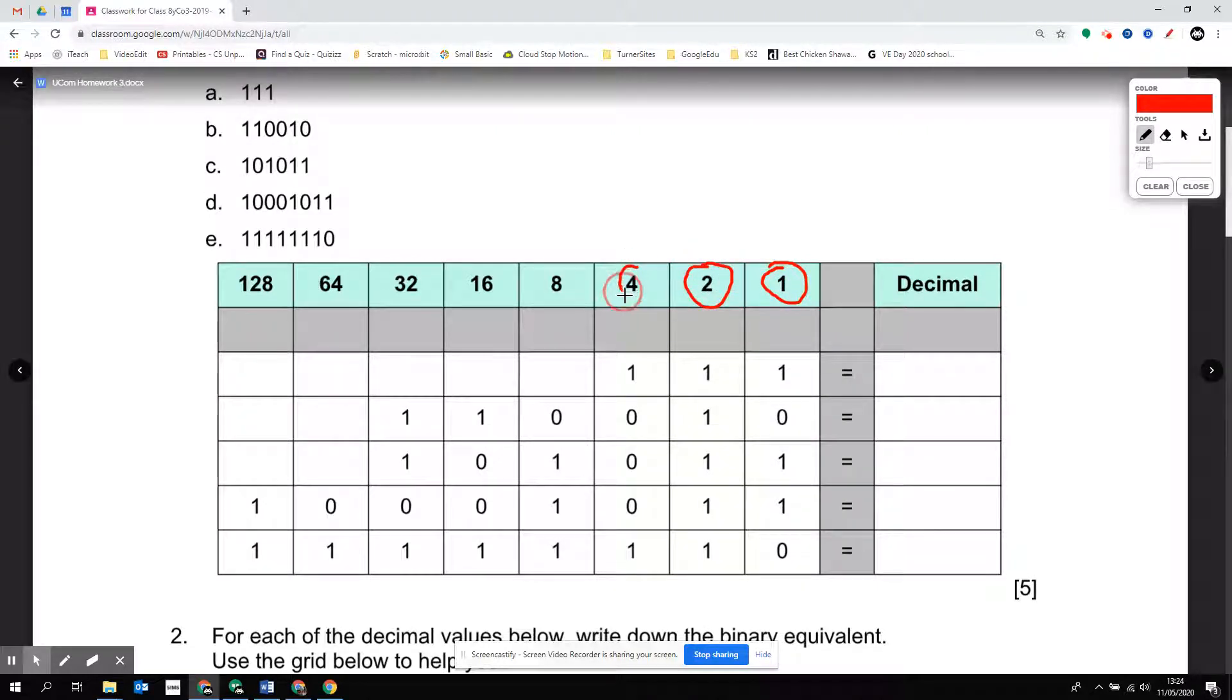One doubled is two, two doubled is four, four doubled is eight and so on, and you go all the way up to 128.